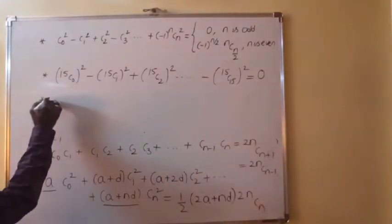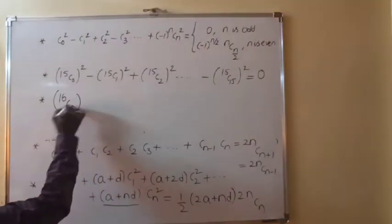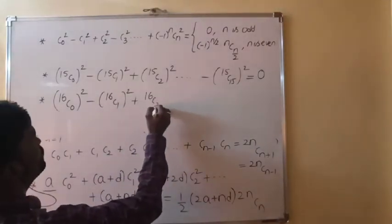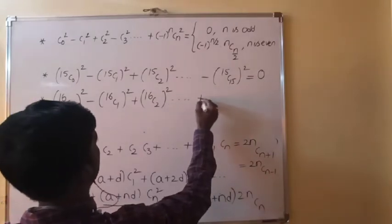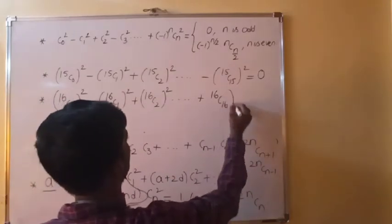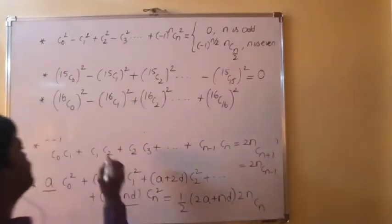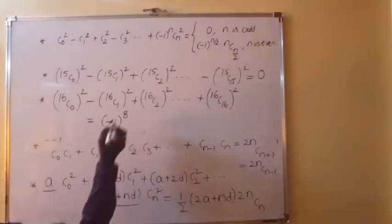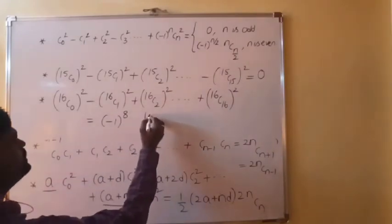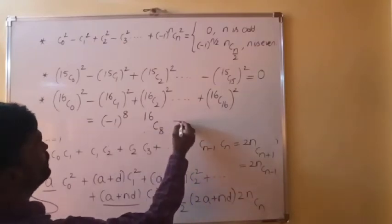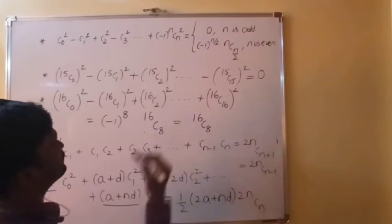Take another example: 16C0²−16C1²+16C2²−...+(−1)^16·16C16². Here N = 16, which is even. So the formula gives (−1)^(16/2)·NCN/2 = (−1)^8·16C8 = 1·16C8 = 16C8.